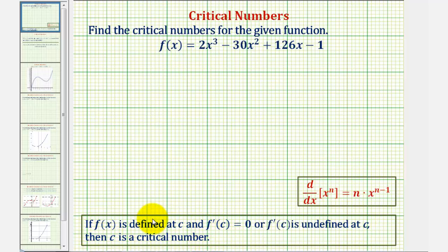The reason we care about critical numbers is that if a function has relative extrema, they will occur at critical numbers. It doesn't mean there will always be a relative extrema at every critical number, but if the function does have relative extrema, they will occur at critical numbers.